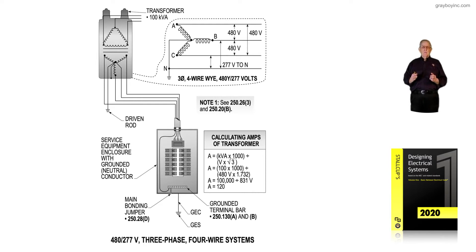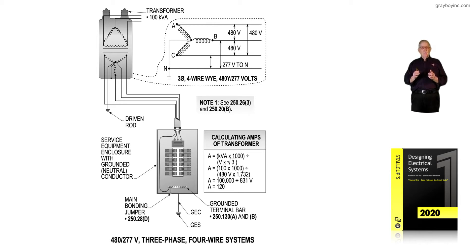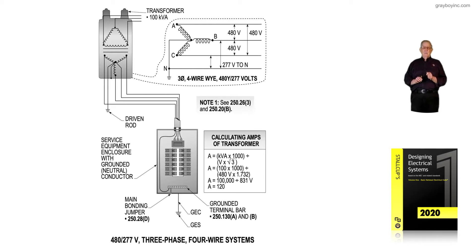Notice the amps on this 100 kVA transformer. Because we're using 480 volts, we calculate the amps based on 480 volts times the square root of three, since it's a three-phase system, and we come up with 120 amps. Notice how those amps came down based on using the higher voltage. As electricians, we remember: the higher the voltage, the lower the amps; the lower the voltage, the higher the amps.